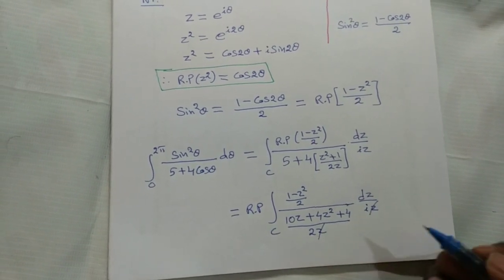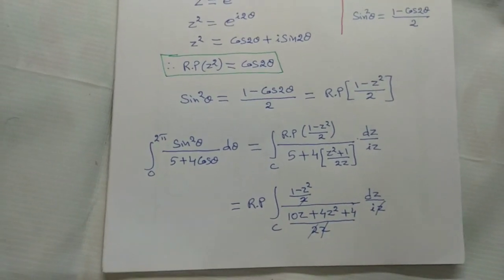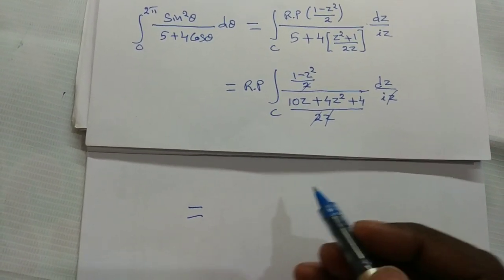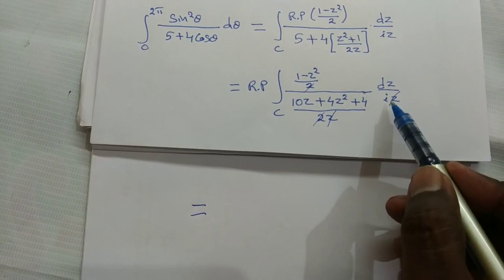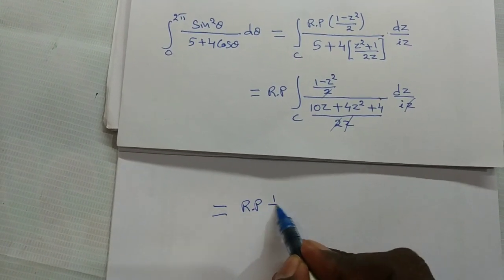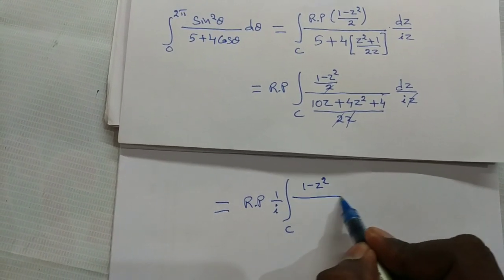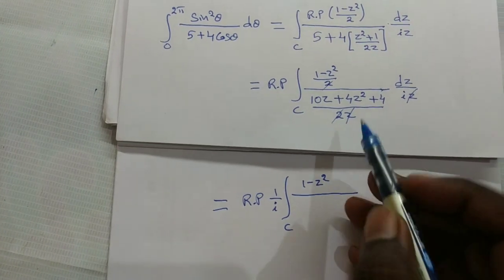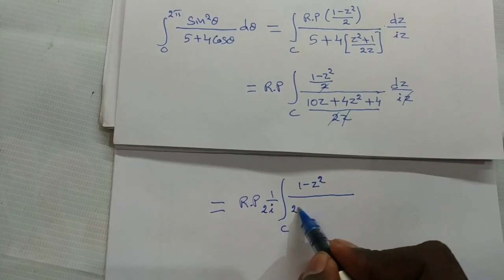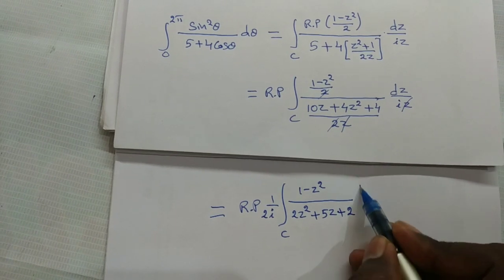After cancellation — z cancels with z, 2 cancels with 2 — taking remaining terms, and 1/i is a constant taken outside, we get: Re[ (1/2i) · ∮_C (1−z²)/(2z²+5z+2) dz ], where the factor of 2 is taken outside the denominator to give 2z²+5z+2.